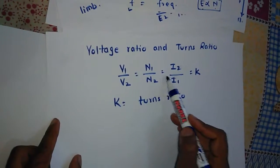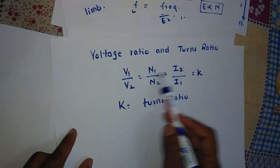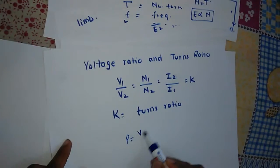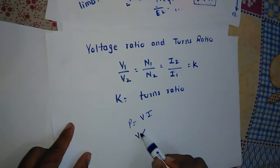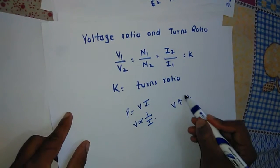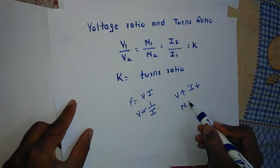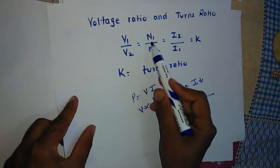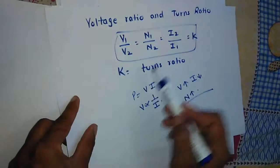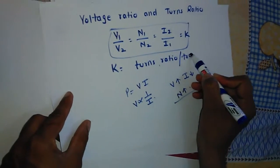Also, N1/N2 = I2/I1 = K. Voltage and current are inversely proportional because power equals V × I, so V is inversely proportional to I. If voltage increases, current decreases, and as number of turns increases, voltage also increases. From this relation, K is called the turns ratio, or sometimes the transformation ratio.